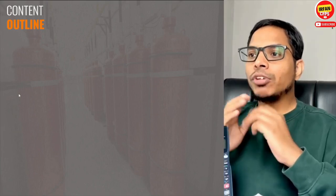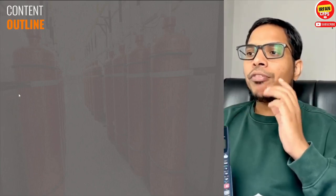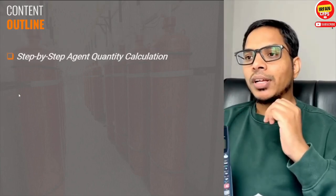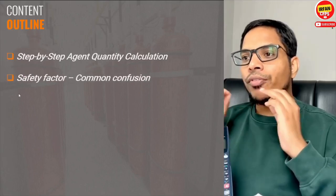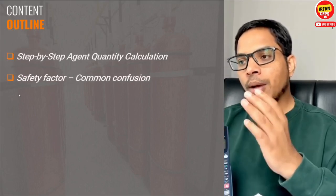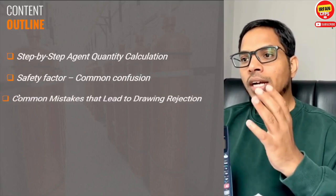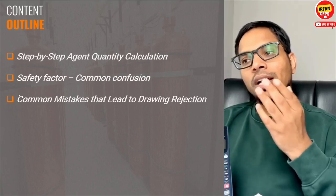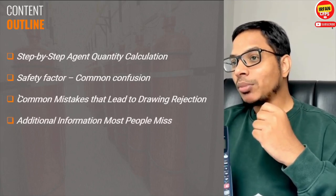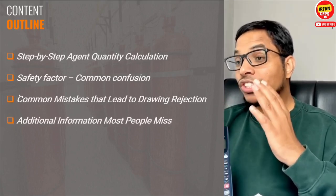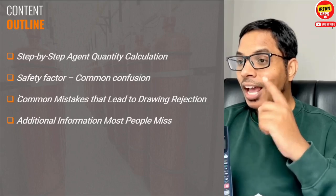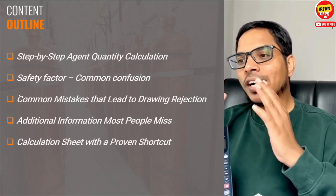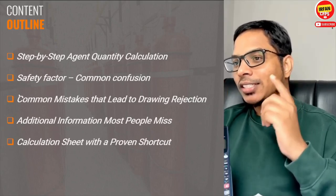In this video, I will show you how to calculate FM 200 agent step by step in a clear and simple way. Then we will address a common confusion: where should the safety factor be applied and by how much. I will also highlight a few mistakes that often lead to drawing rejections so you can avoid them, plus some important details most engineers miss. And finally, I will share a quick shortcut to do the full calculation in under a minute.